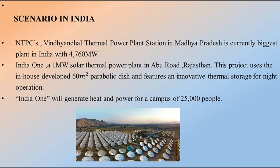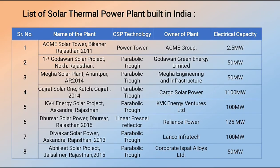Regarding the scenario in India: India's largest thermal power plant in Madhya Pradesh, the Vindhyachal power plant, produces 4,760 megawatts of electricity. A project based on in-house developed 60-meter parabolic dishes generates electricity in Rajasthan. Most solar thermal power plants in India use parabolic trough technology. The first ever project is the Godawari Solar Project in Rajasthan, estimating 50 MW; Gujarat Solar One estimates 1,100 MW; and the Dhursar power plant in Rajasthan uses linear Fresnel reflector technology, estimating 125 MW.